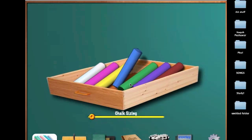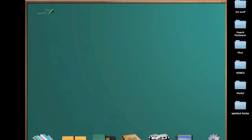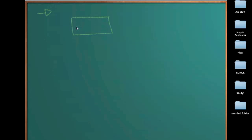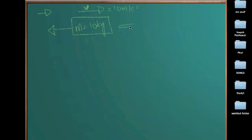Now let me take a more complicated case. Let's say we have a box of mass 10 kilograms. It was initially moving in one direction, but then I came and pushed it with my finger, applying a force of 20 newtons in a different direction. We need to figure out what happens — specifically the direction of friction force and the net force.